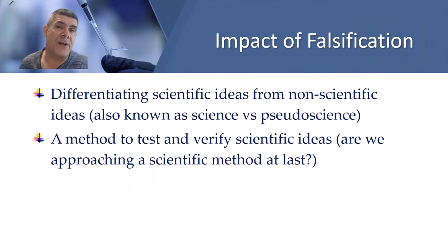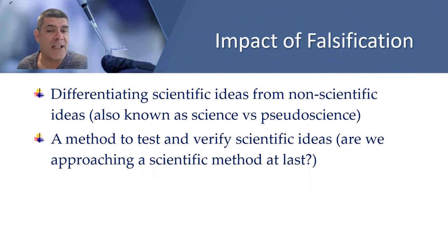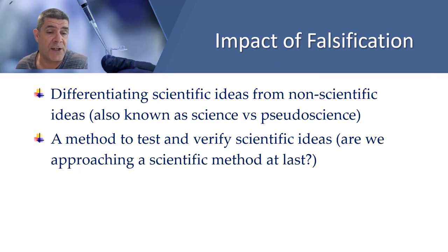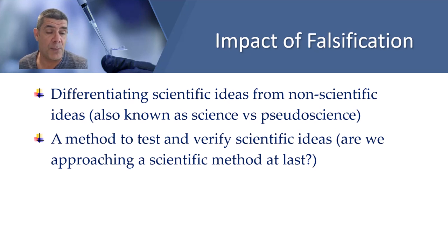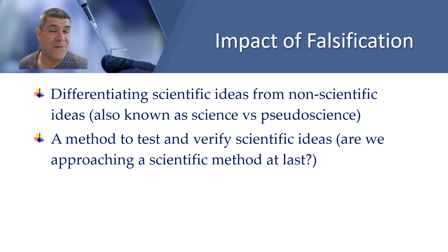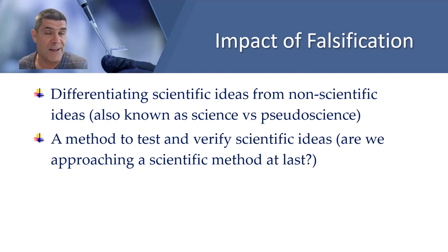Whilst not everything agrees with the principle of falsification, falsification has impacted on two key aspects of science. Firstly, differentiating scientific ideas from non-scientific ideas — which you might also see described as the difference between science and pseudoscience. And also, very importantly, a method to test and verify scientific ideas. Perhaps it's taken us five videos in, but we're starting to approach an understanding of what the scientific method is at last.